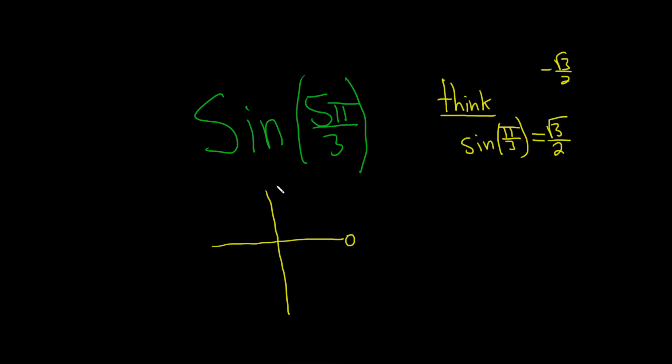So this is zero, this is π/2, this is π, and this is 3π/2. And then this here is 2π.